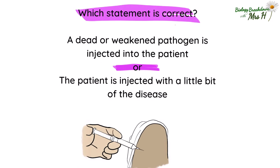Terminology around immunity and vaccination can be tricky for a lot of students. Which statement is correct about vaccination? A dead or weakened pathogen is injected into the patient — or the patient is injected with a little bit of the disease. The second statement is a common answer but you can't inject a disease. A disease occurs within the person due to the pathogen. So the first statement is correct, and make sure you do write that the pathogen is dead or weakened.